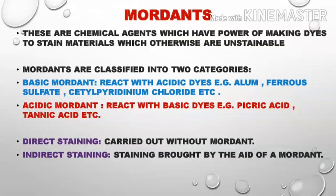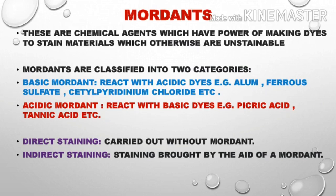Now, what is a mordant? In gram staining, what do we call the mordant? Mordants are chemical agents that have the power of making dyes stain materials which otherwise are unstainable. Some stains and specimens by themselves do not bind well, so the mordant is added to increase that binding ability between the dye and the specimen.